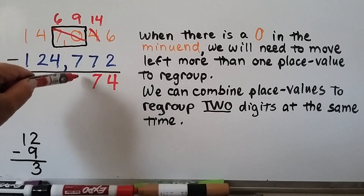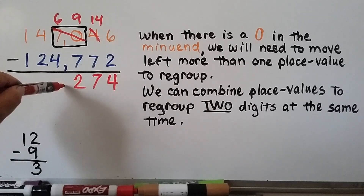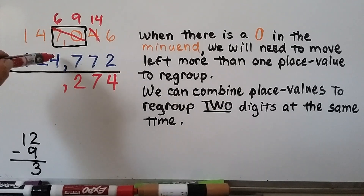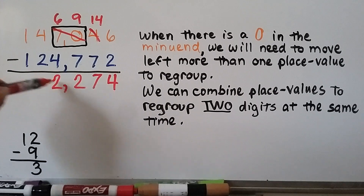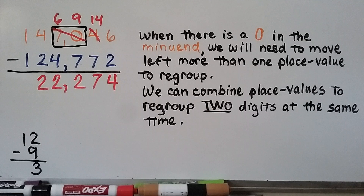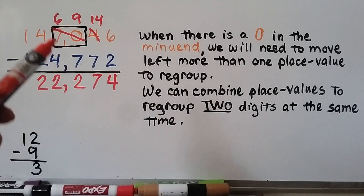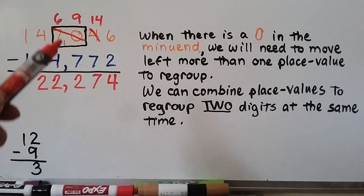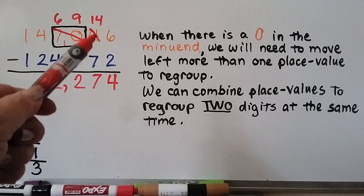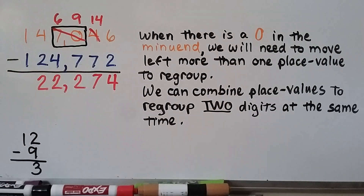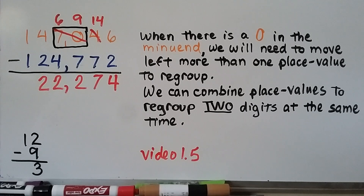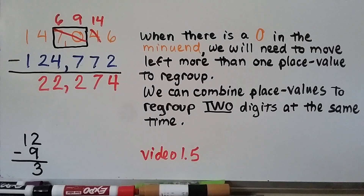9 minus 7 is 2. We put our comma, nicely lined up. 6 minus 4 is 2. 4 minus 2 is 2. And 1 minus 1 is 0, so we don't write anything there. We used two place values as a 70, so when we regrouped it became a 69, and we gave the 1 to the place value on the right. That's why we learned about renaming and combining place values in video 1.5 — there will be a link to that video in the description.